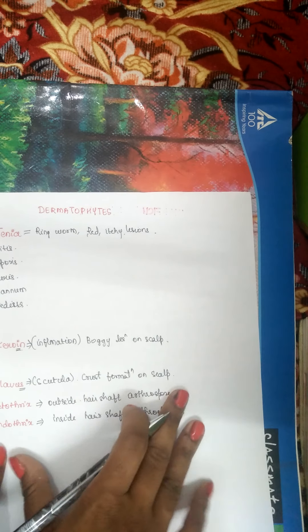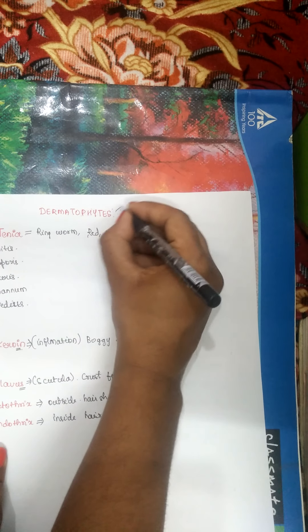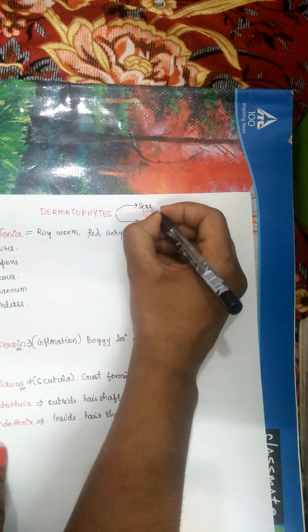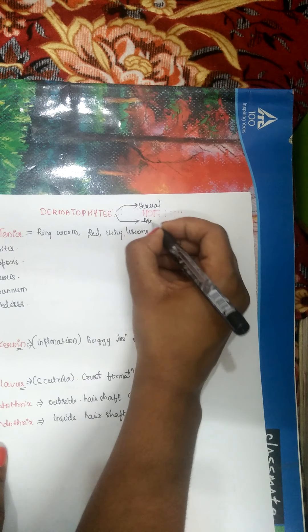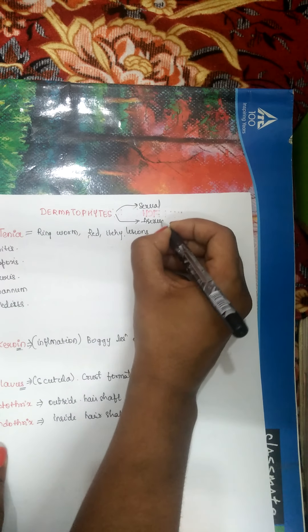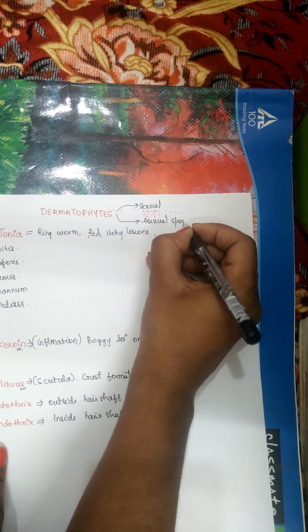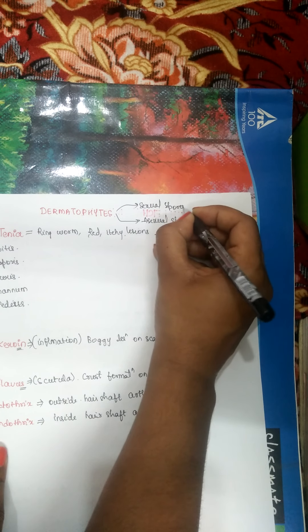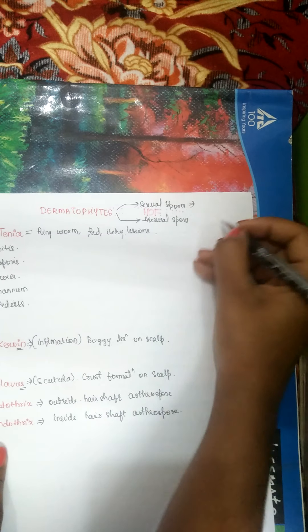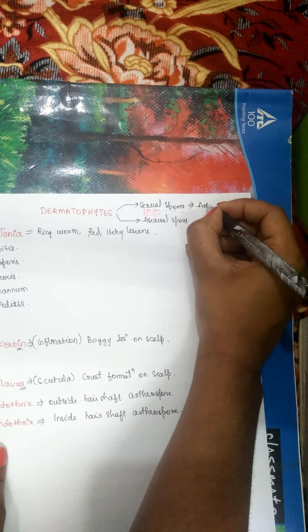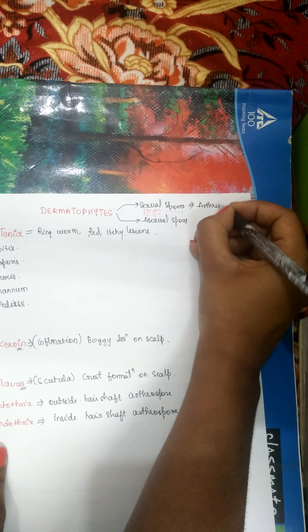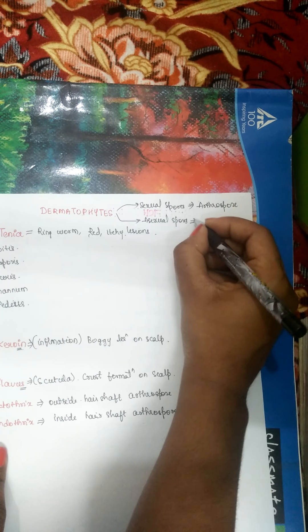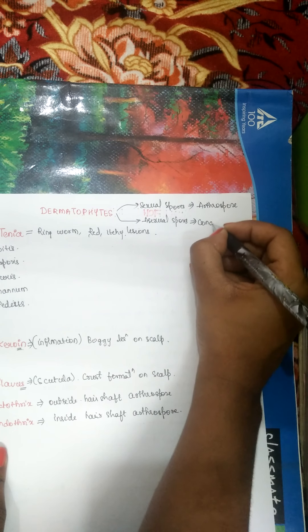This is important: arthrospores are sexual spores. Dermatophytes have two types of spores — sexual spores, which are arthrospores, and asexual spores, which are conidia.